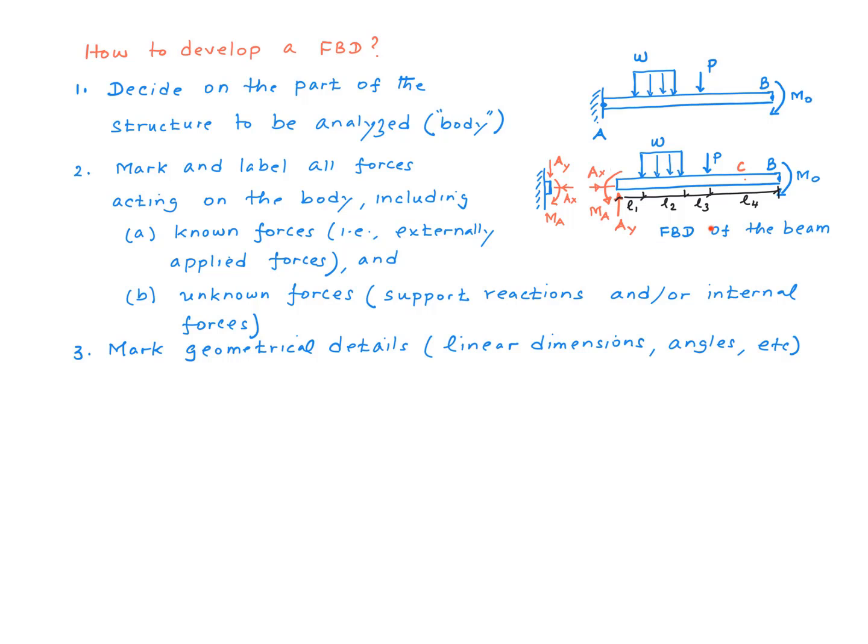Finally, to complete the free body diagram, we want to put down all of the geometrical details. In general, these geometrical details will consist of linear dimensions, angles, ratios, and so on. In this example, the relevant geometrical details are simply the linear dimensions L1, L2, L3, and L4.